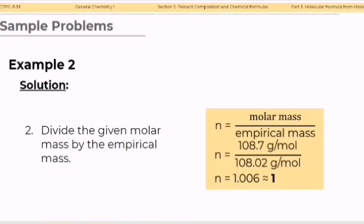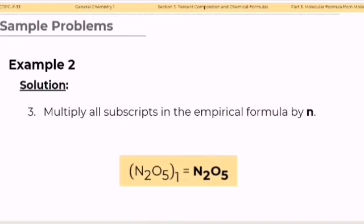Step 2: Divide the given molar mass by the empirical mass. Substituting the values, we have 108.7 grams per mole divided by 108.02 grams per mole, which is equal to 1.006, or approximately 1. Step 3: Multiply all subscripts in the empirical formula by the value of N. Since N is just 1, the molecular formula is just the same as the empirical formula: N2O5.